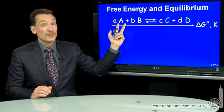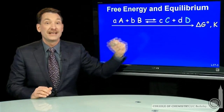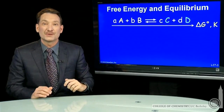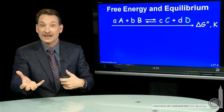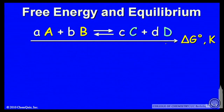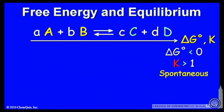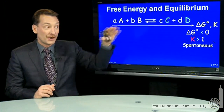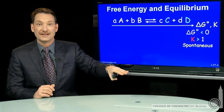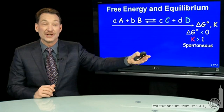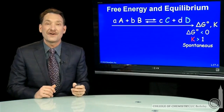K greater than 1 indicates products will be favored. K less than 1 indicates reactants will be favored. So there's a correlation between the magnitude of K and the magnitude of delta G standard. Products over reactants — if the products are larger than reactants, that's greater than 1 in the ratio, and that's a K greater than 1. Products are favored.